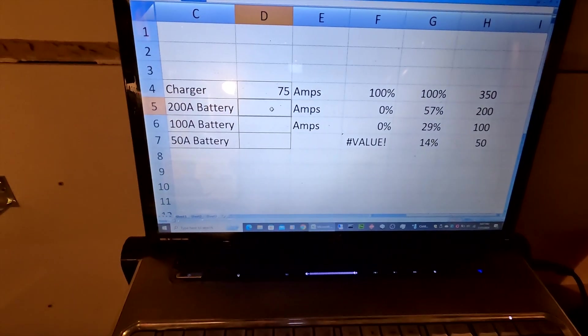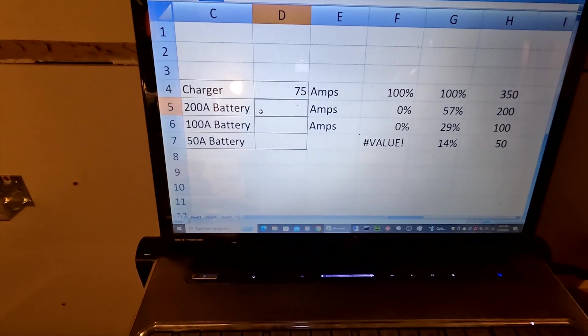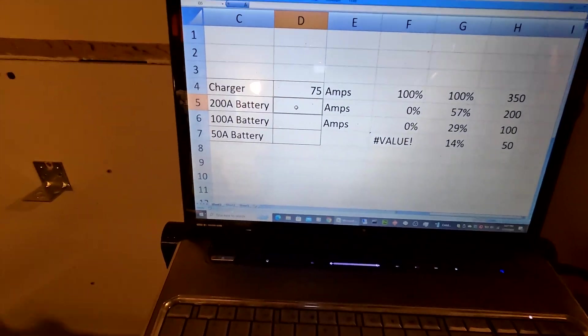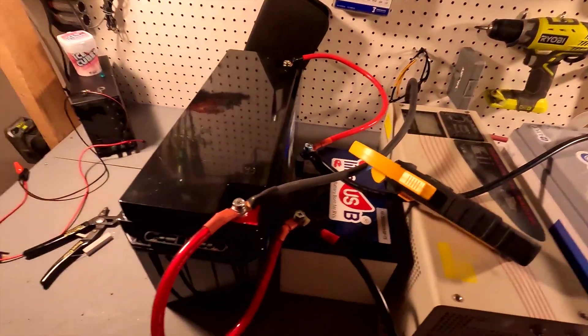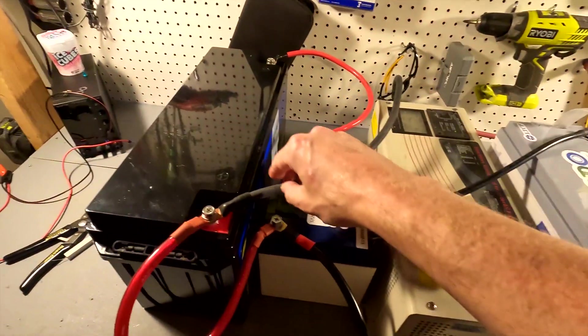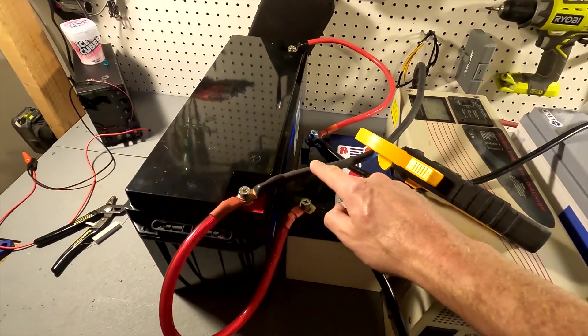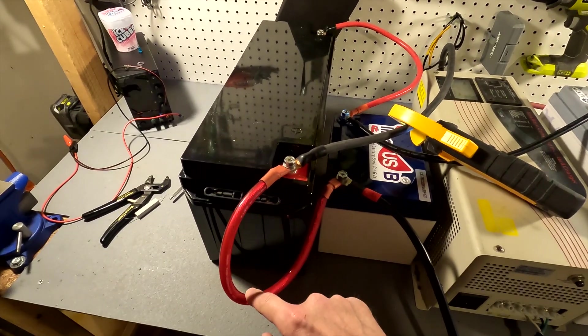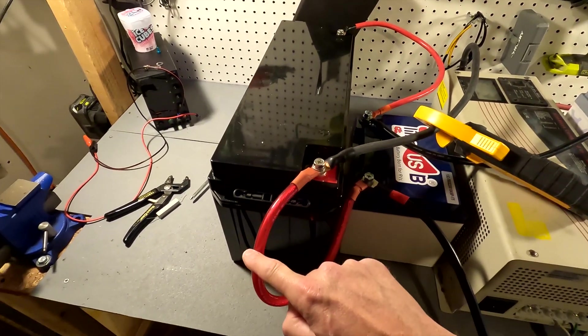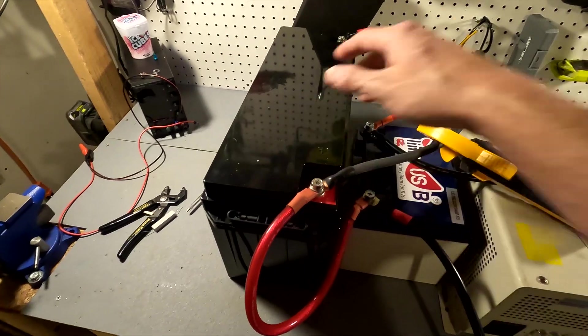So let's go ahead and figure out what the 200 amp hour battery is accepting. And the way we're going to do that is that we know 75 amps is going through this cable and whatever is leaving this cable, we need to subtract this from this. And that's what this battery is accepting.